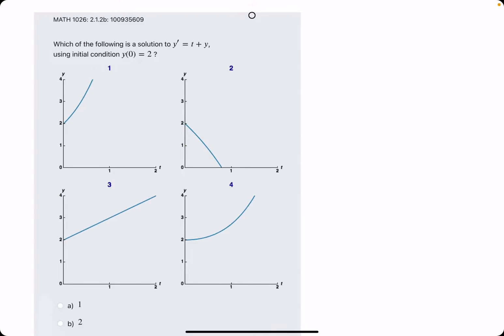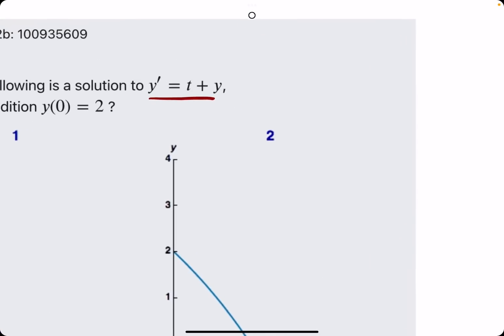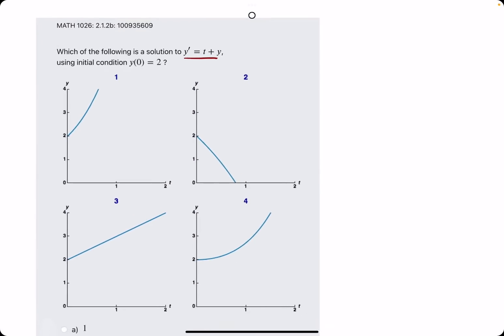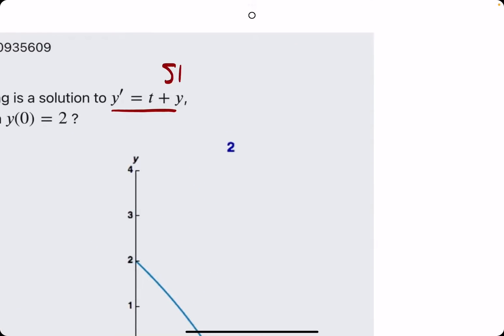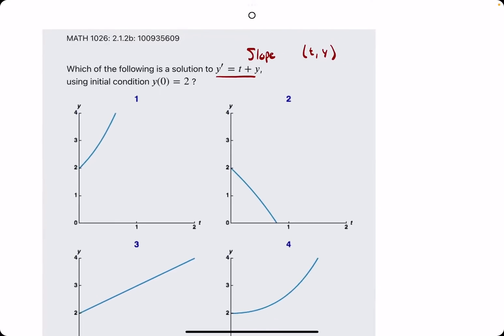Okie dokie. In this problem, they provide us with the differential equation y' is equal to t plus y. Keep in mind, this will tell us the slope at whatever t and y value we plug in. So at whichever ordered pair we want to know the slope for, we will plug it into y' and y' will tell us the slope.